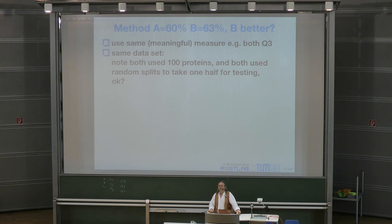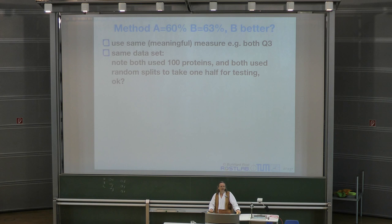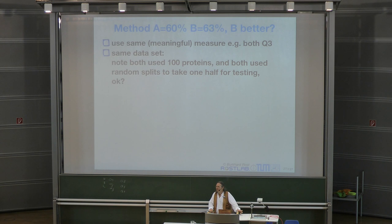They use the same 100 proteins — is that enough? The random split means it's very possible that the actual test set is not the same. They start with the same 100 proteins, but they split them randomly, so odds are very high that they split them differently.